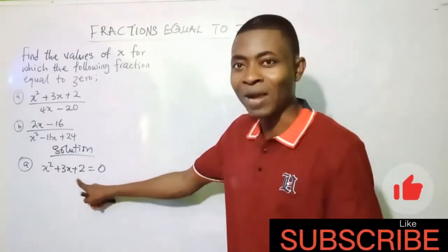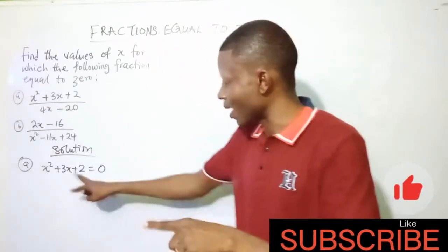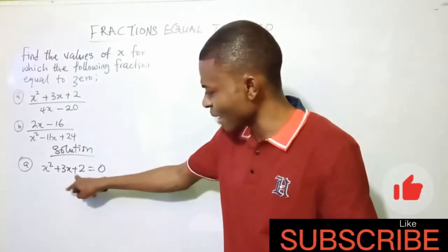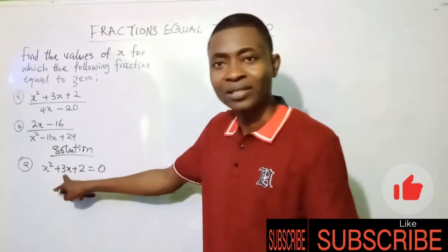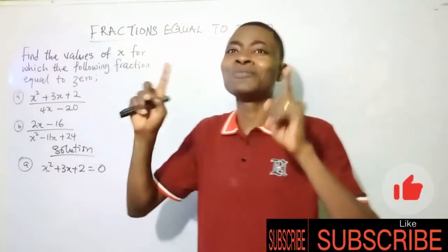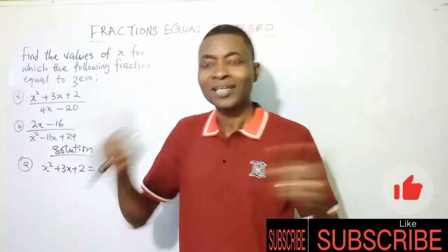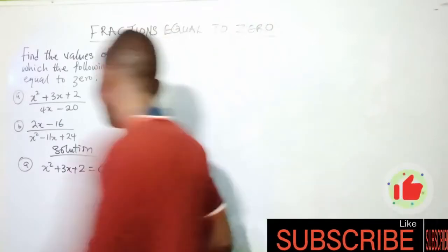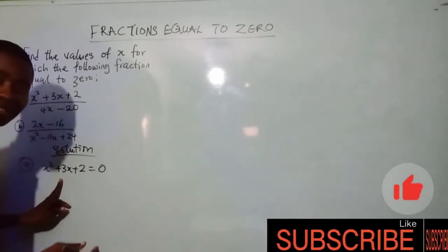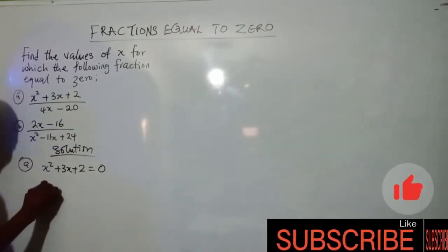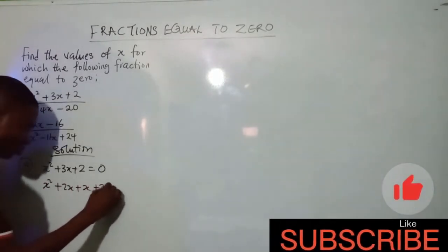I'll look at this constant here. What two numbers will multiply themselves together to give me 2, and when I add them or subtract them, will give me plus 3? You'll be thinking of 2 and 1. 2 times 1 is 2, and 2 plus 1 is 3. So the answer is 2 and 1. Since I have 2 and 1, in place of 3x, I'm going to replace it with 2x and 1x.